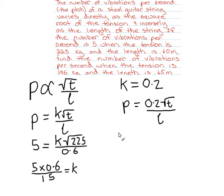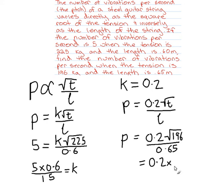There's a question somewhere here at the end. Find the number of vibrations per second, that's P, when the tension is 196 and the length is 0.65. So it's just a question of substituting. We want to find P, 0.2 square root of 196 over 0.65. So that's 0.2 times the square root of 196 is 14, over 0.65.